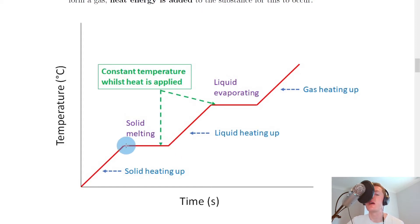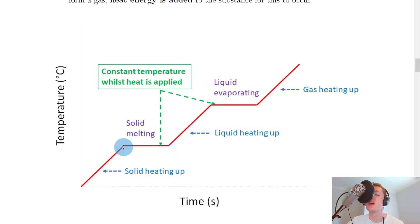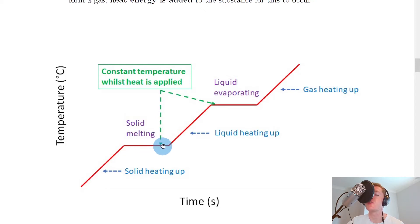So the solid is melting between this point and this point over time. Because we've got a horizontal or straight line on the graph, this means that the temperature is constant — it stays the same over this time. As the solid melts from a solid into a liquid, the temperature remains the same. At this point, all of our solid has been completely changed into a liquid.